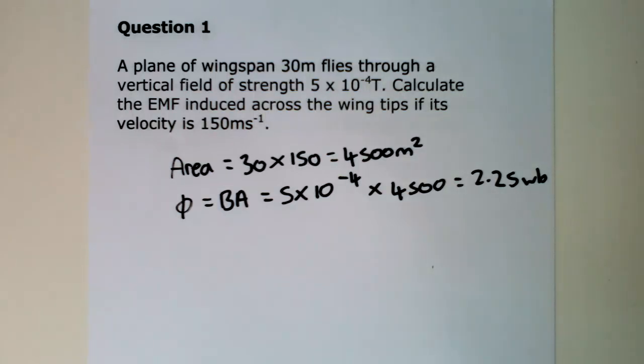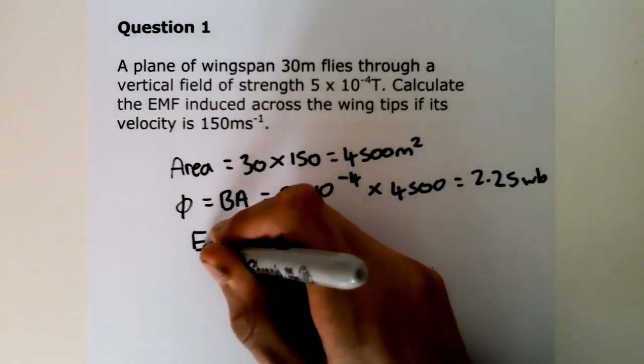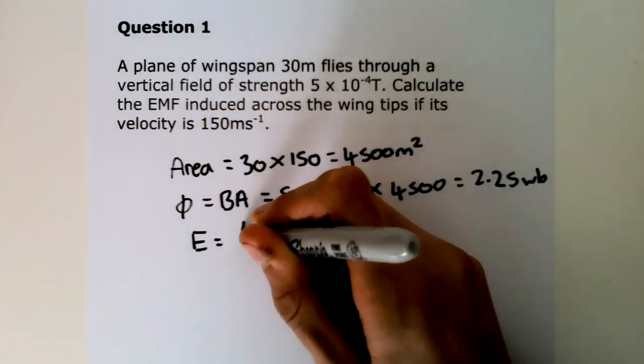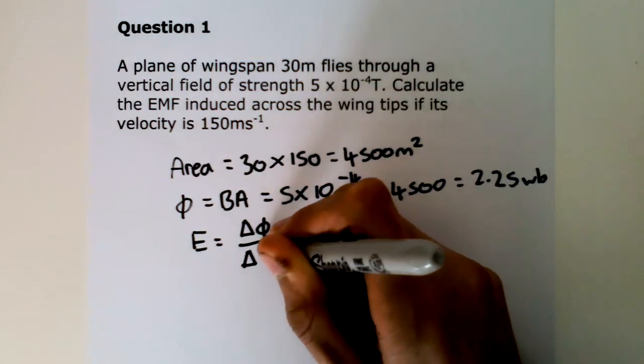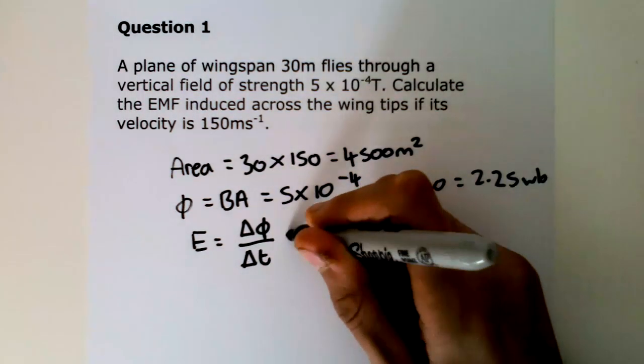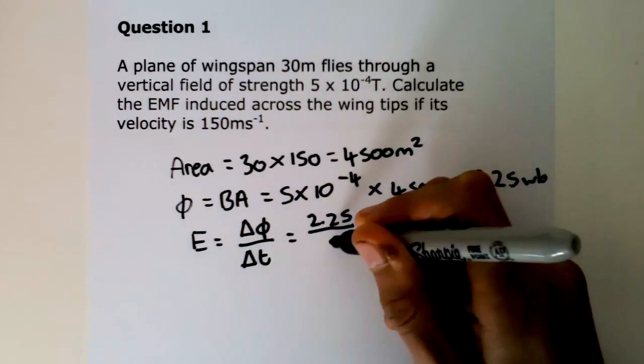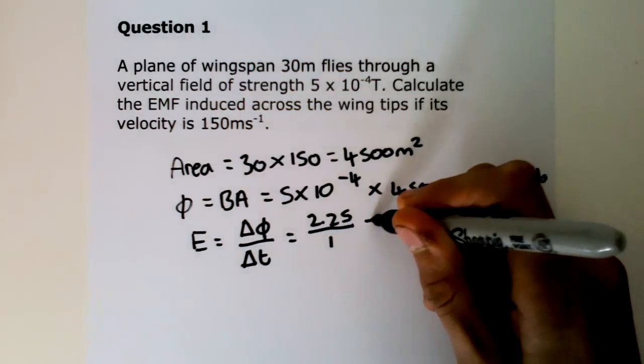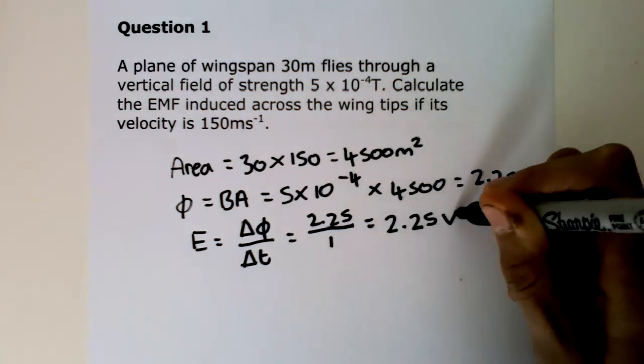So the EMF induced is equal to, so EMF is equal to delta phi over delta t, which is equal to 2.25 over 1, which is equal to 2.25 volts.